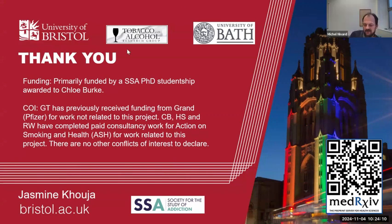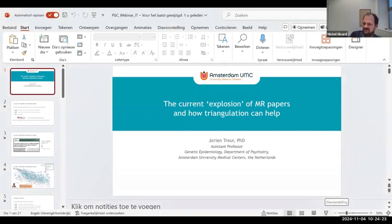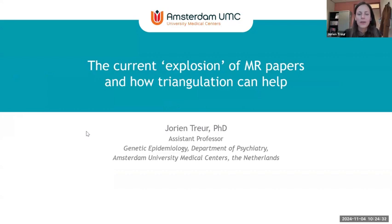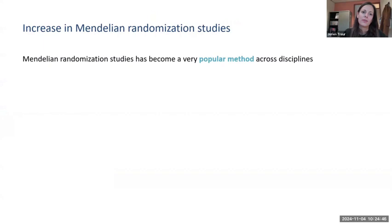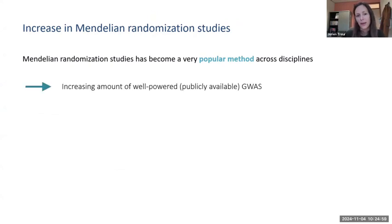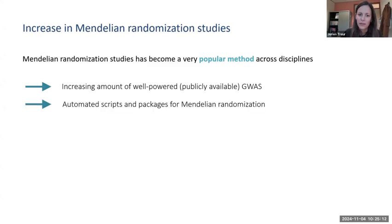Our next speaker is Jorien Treur, an assistant professor of genetic epidemiology studying co-morbidity at the Amsterdam UMC. She'll discuss the current explosion of MR papers and how triangulation can help. MR has become very popular across many disciplines including psychiatry. This is partly because there are more well-powered GWAS studies that are publicly available, making summary-level MR easy to conduct, and also because scripts have become much more automated — particularly the MR-Base platform, which provides packages and instructions for conducting MR studies.